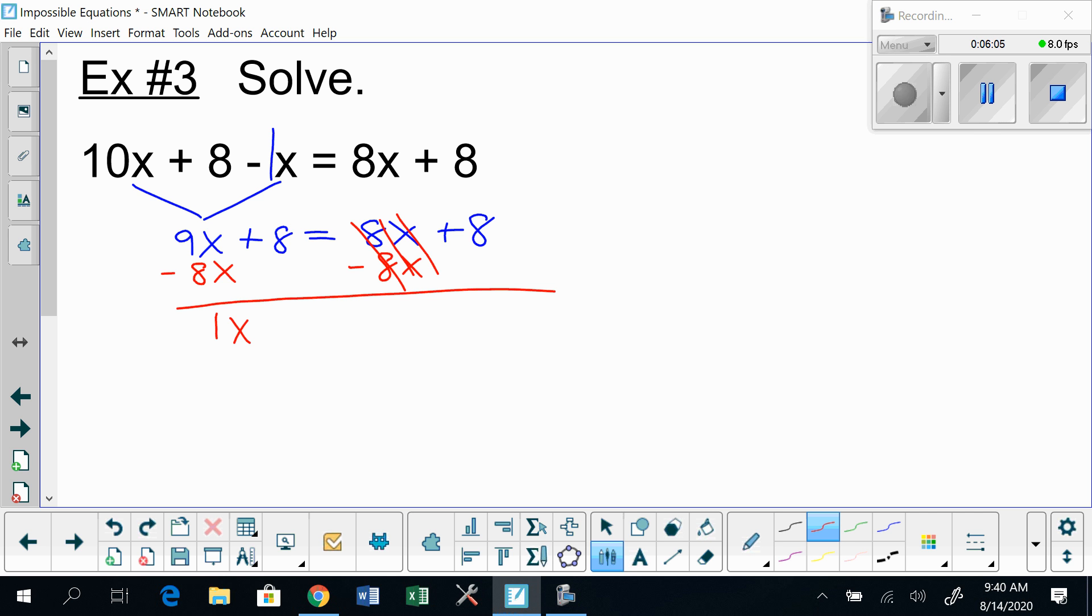But watch what happens with my constant terms in this last example. I subtract my 8 away from the left to make the constant term vanish from the left, and it also accidentally makes the constant term vanish from the right. Now in this case, we can go ahead and write a 0. We can say 8 minus 8 is equal to 0.